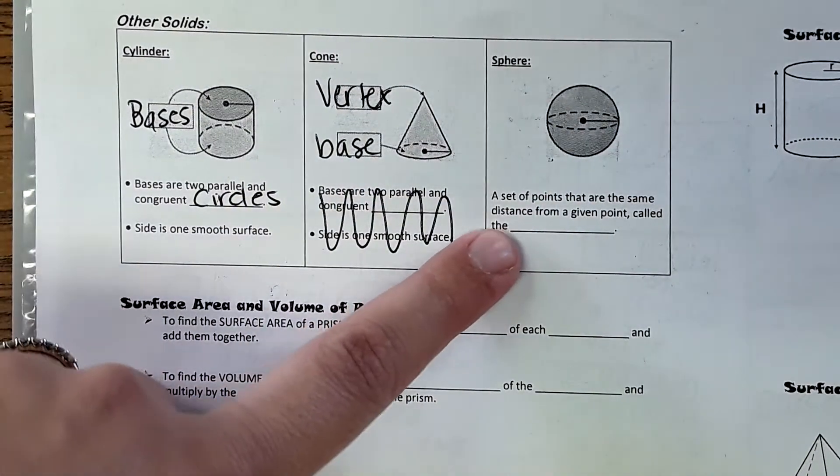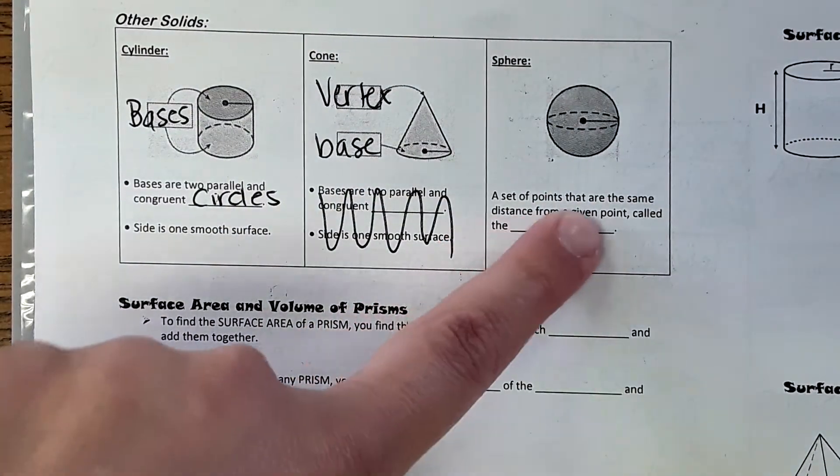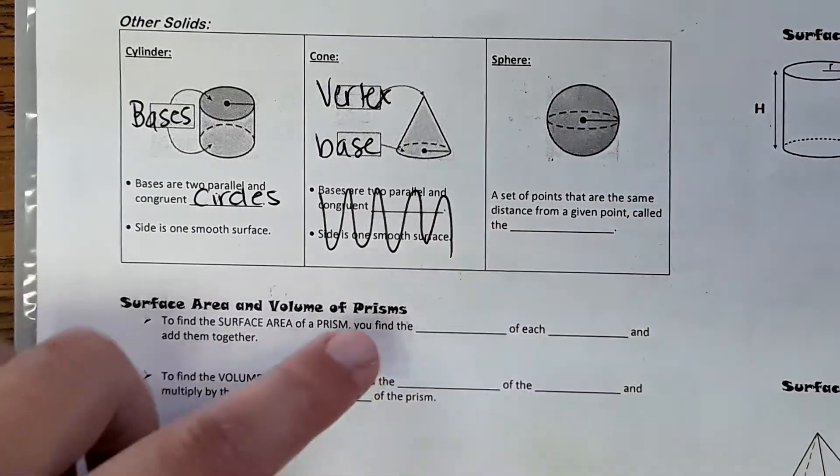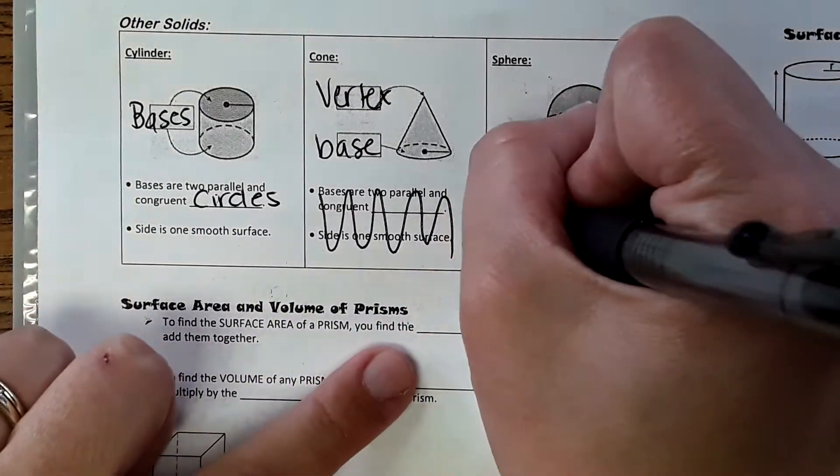A sphere, by definition, is a set of points that are all the same distance from a given point called the center.